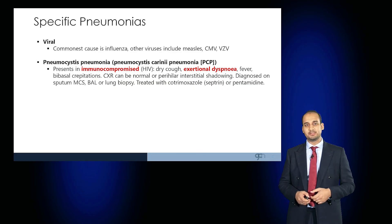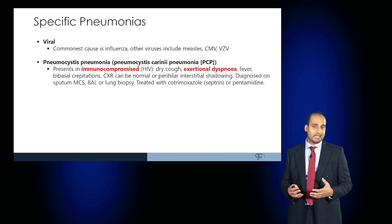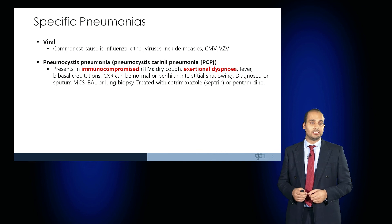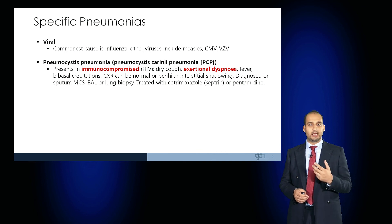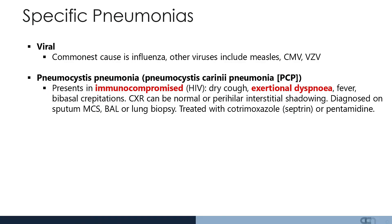Be aware that as well as bacteria, viruses such as influenza, CMV, VZV and COVID-19 can cause specific pneumonias. Pneumocystis carinii pneumonia (PCP) presents in immunocompromised patients, particularly those with HIV, and can result in exertional dyspnoea. When these patients are exercised they tend to rapidly desaturate. The chest X-ray can be normal and then very quickly deteriorate, and this is usually diagnosed on sputum MCS, bronchoalveolar lavage or lung biopsy, and is treated with co-trimoxazole or pentamidine.